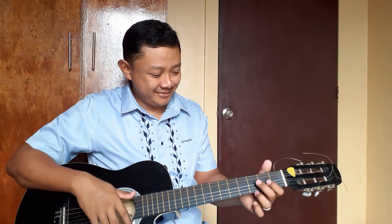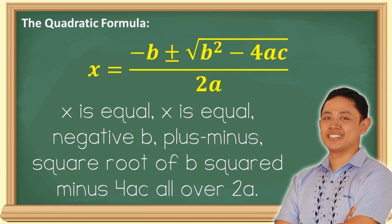Now we'll sing the quadratic formula to the tune of that nursery rhyme. Are you ready? Let's sing it. Negative b, plus minus square root of b squared minus 4ac, all over 2a.